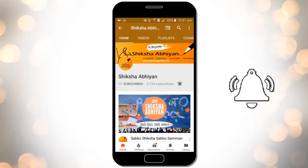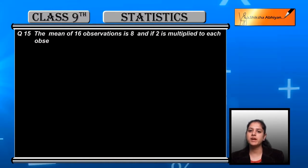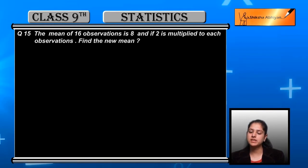Question number 15: The mean of 16 observations is 8, and if 2 is multiplied to each observation, find the new mean. We have 16 total observations with an original mean of 8.